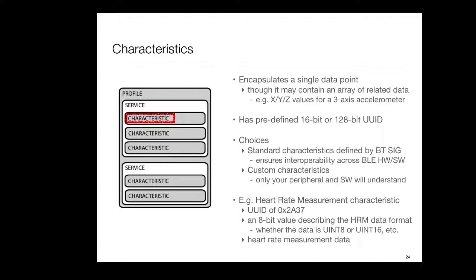A characteristic encapsulates a single data point. You can think of it as the final nameable thing - a measurement or control. But it can have multiple channels, like three channels of an accelerometer, so it doesn't have to be a scalar. It has predefined ways of identifying it. There are standard characteristics that the Bluetooth SIG, Special Interest Group, has defined. This means the same unit agreement, like acceleration in meters per second squared or heart rate in beats per minute. You can also define custom characteristics which only your software will understand. Heart rate measurement characteristic has a UUID defined by the standard, and it's an 8-bit data value with format information.